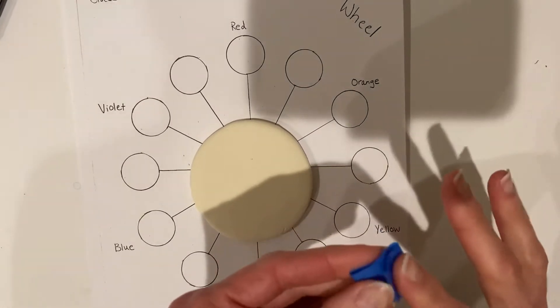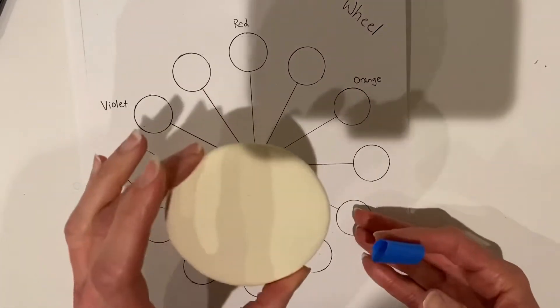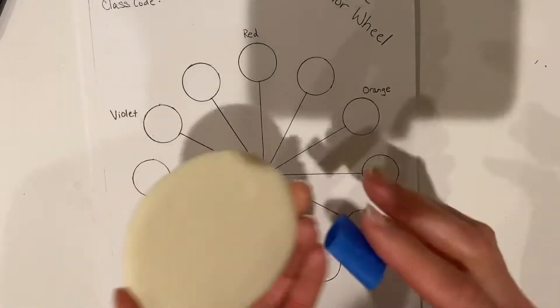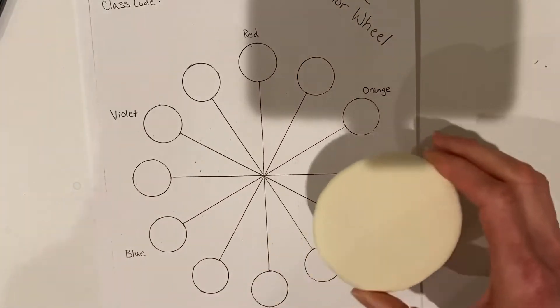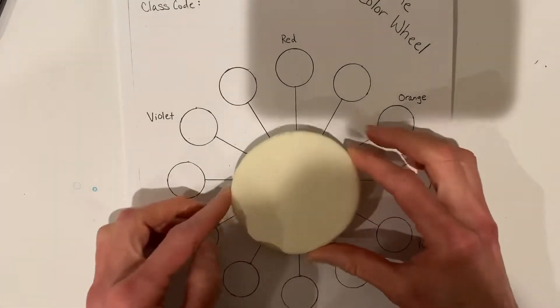First thing you're going to do is tape your model magic disc to your color wheel worksheet. So just put a piece of tape on the back. This is just temporary, but you want to try to center it as best as you can.